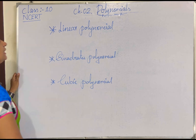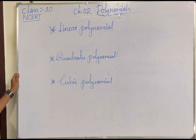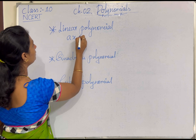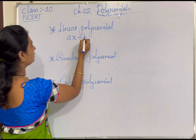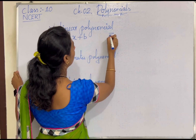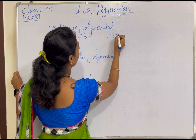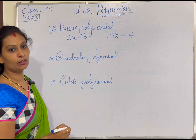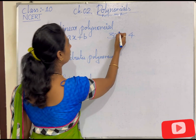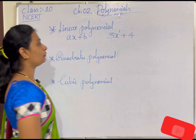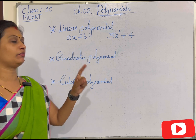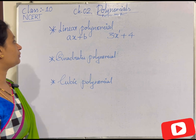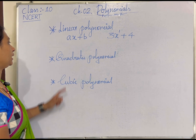What is a linear polynomial? The general form of a linear polynomial is ax + b. For example, 3x + 4. The highest power of the variable is 1. If any polynomial expression has degree 1, we classify it as a linear polynomial.